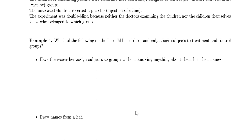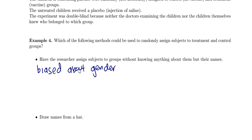Let's go through some methods you could use to randomly assign people to treatment and control groups. The first: have the researcher assign subjects to groups knowing only their names. The problem is that names vary according to gender, ethnicity, and age, so the researcher might have some unconscious bias — bias about gender, ethnicity, or age. So this is not a good method.